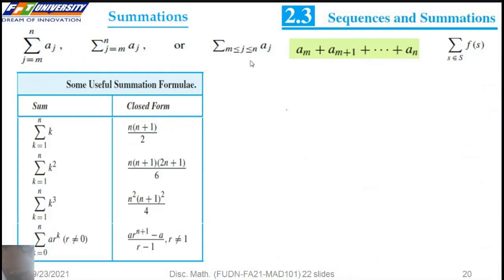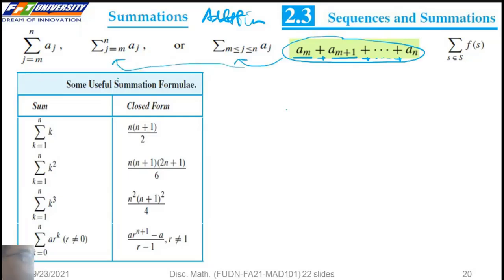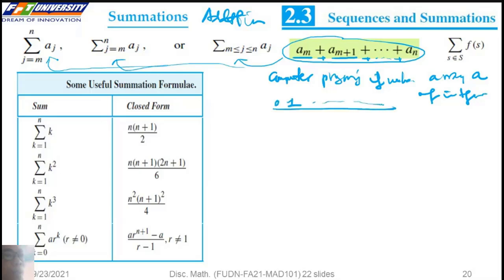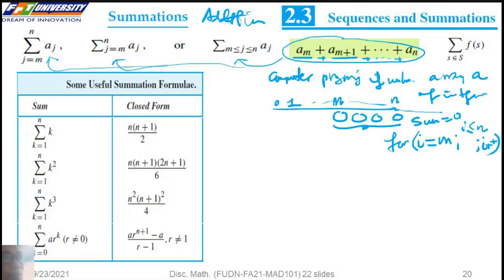We have notation to represent the summation of an addition. We can write the sum as A_M plus A_{M+1} and so on up to A_N. In this notation, the index starts at M. In computer programming, we can use a loop: for I beginning at M up to and including N, we assign the sum as 0 and execute sum equals sum plus A_I.